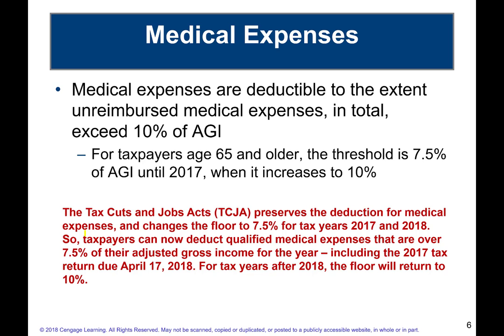Medical expenses are deductible to the extent they exceed 10% of adjusted gross income. AGI is an important number because it's used as a base for many itemized deductions. If you're 65 or over, they lower that threshold to 7.5%. The Tax Cuts and Jobs Act changed the floor to 7.5% for all taxpayers for 2017 and 2018, going back up to 10% after 2018.